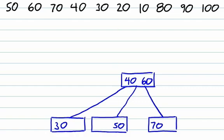The next number we insert, 20, is less than 40, so it's going to be going in this child over here. Since this is a leaf node and there is room for it, we can simply add the value 20 to this existing node.